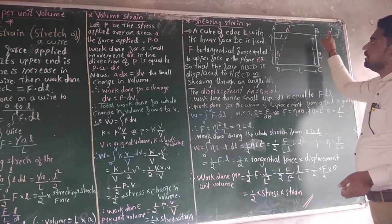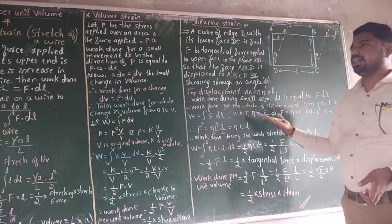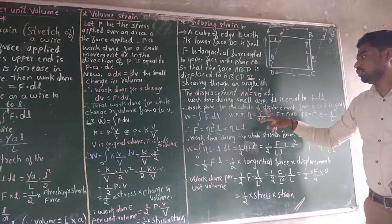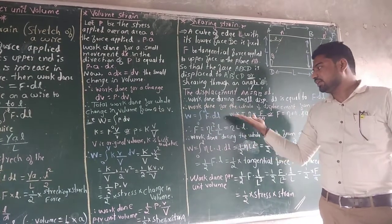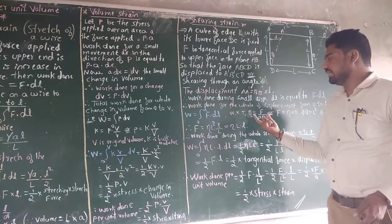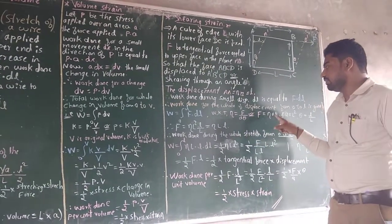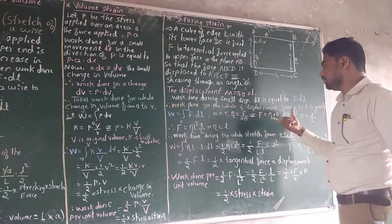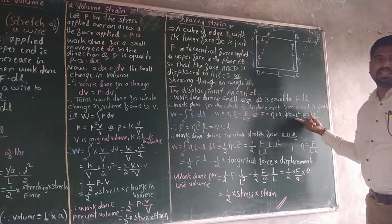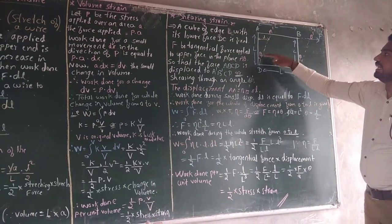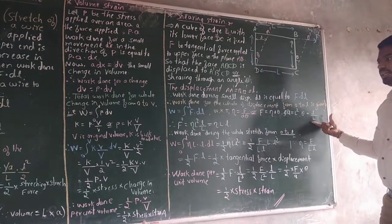To find total work done from A to A-dash (displacement 0 to L), integrate the equation with limits 0 to L: work done equals integration from 0 to L of F into dL. From a previous class, shear modulus eta equals F/(A·theta), and from the diagram A equals L squared. The shear angle theta equals small L divided by capital L.